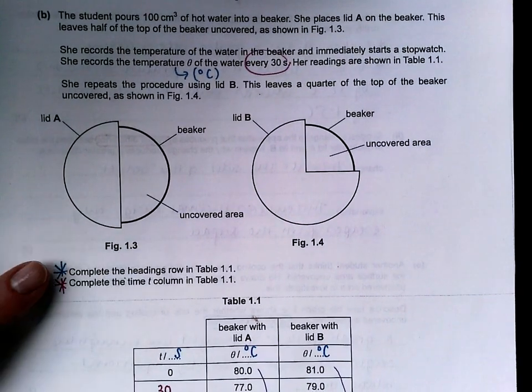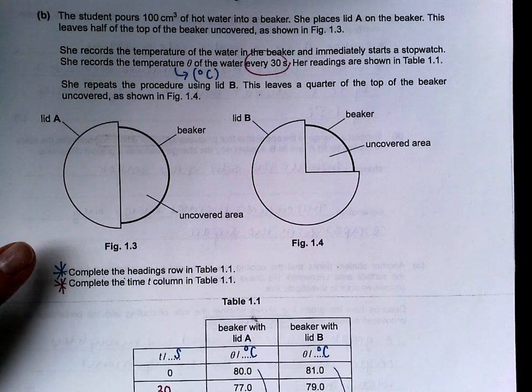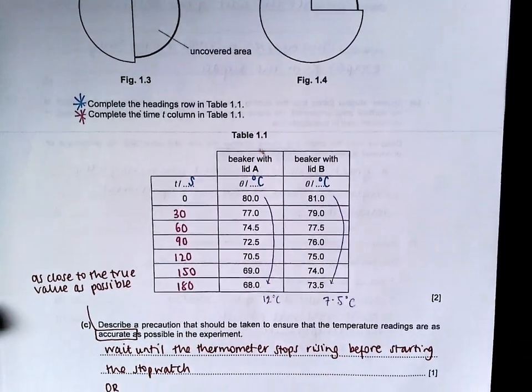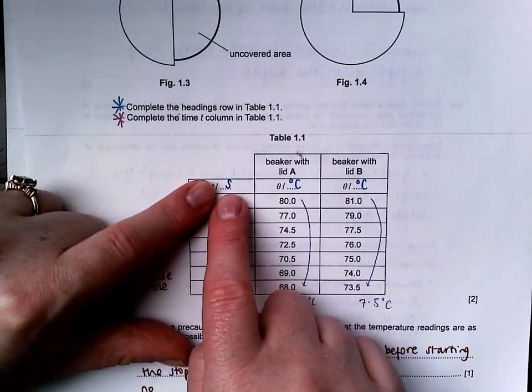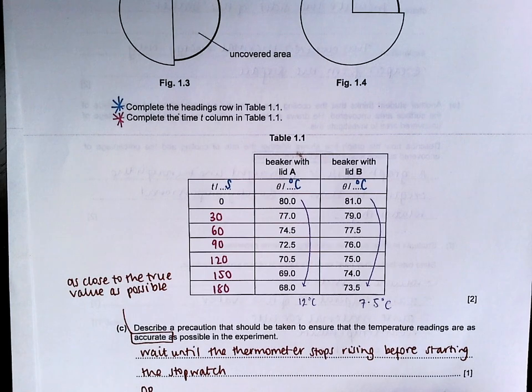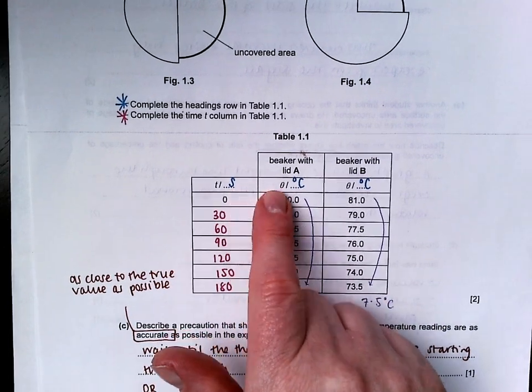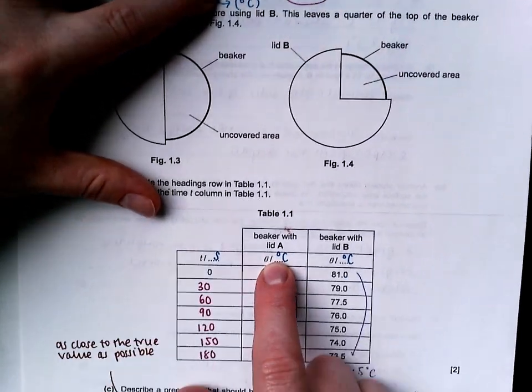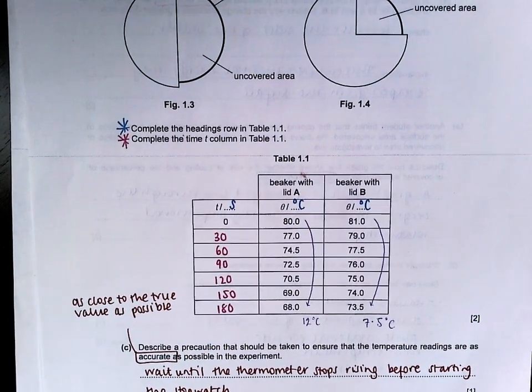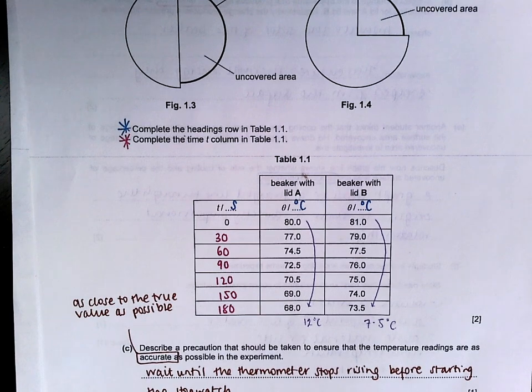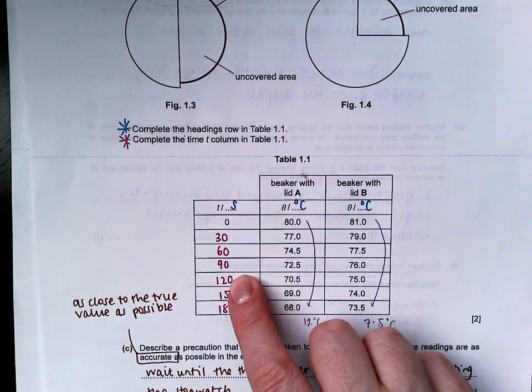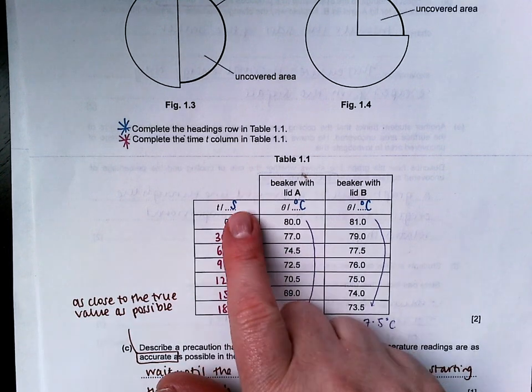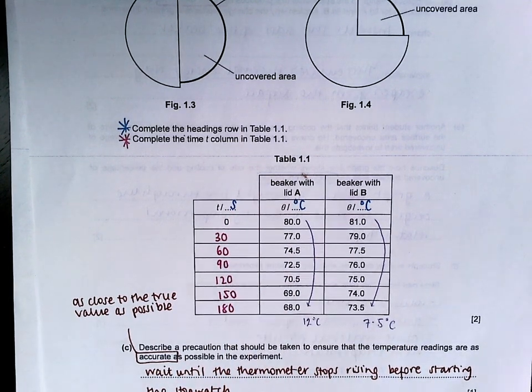Her readings are shown in Table 1.1. She repeats the procedure using lid B. Many of you missed the instructions, you're not reading carefully enough. For one mark, you needed to complete the headings row in Table 1.1. Every single time there will be one mark for listing the units missing in the table. So time will be in seconds. Theta was a temperature value in degrees Celsius for both A and B. And then complete the time column, we were told it is being measured every 30 seconds. So you just need to go up in 30s until you reach the end of the table.